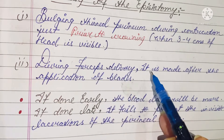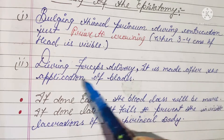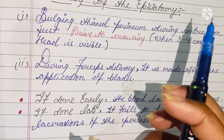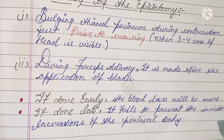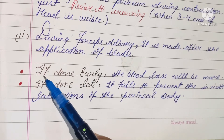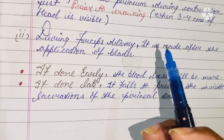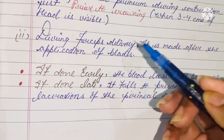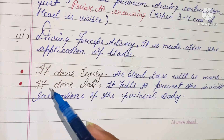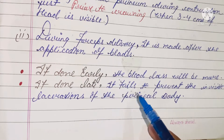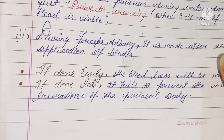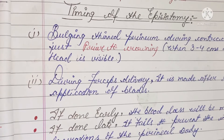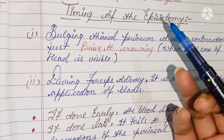During forceps delivery, episiotomy should be made after the application of blades on the fetal head, because it will be very difficult to apply the blades afterwards. If episiotomy is done too early, blood loss will be more. If done too late, it fails to prevent the invisible relaxation of the perineal body. So we should know the exact timing to conduct episiotomy.